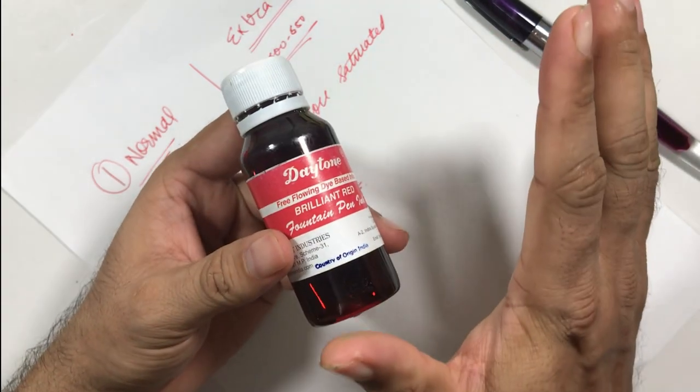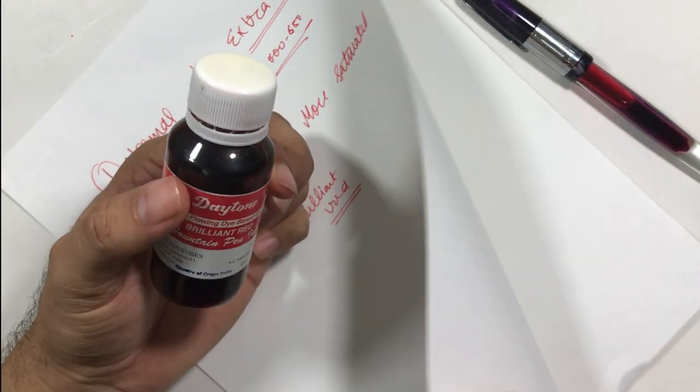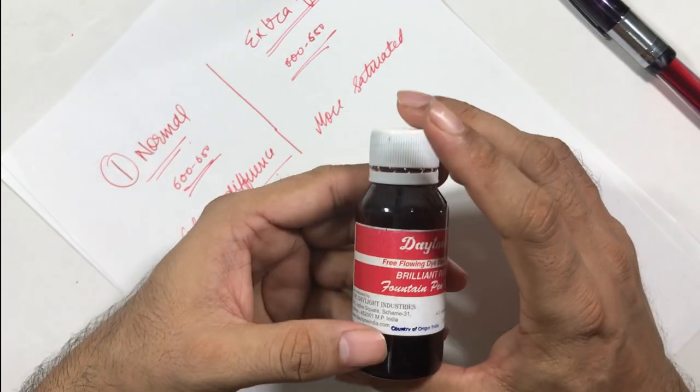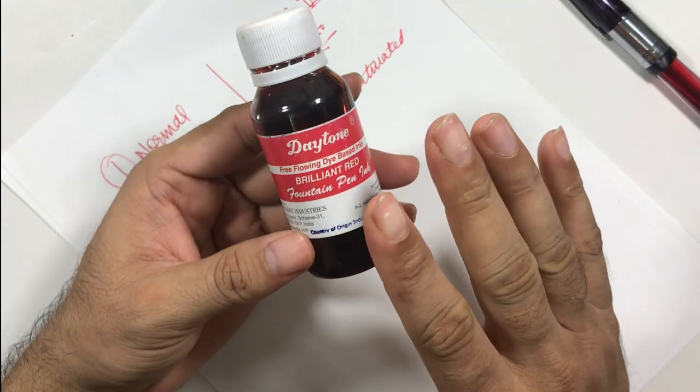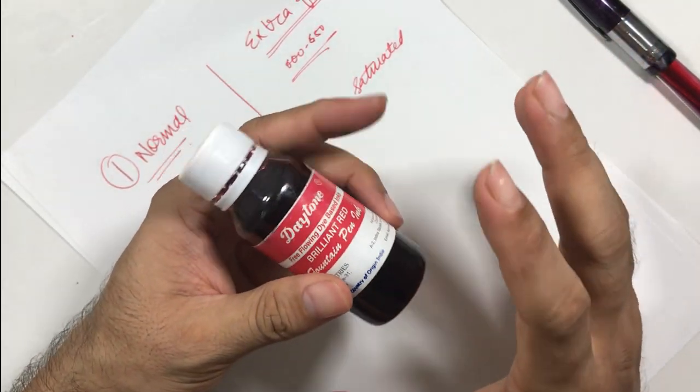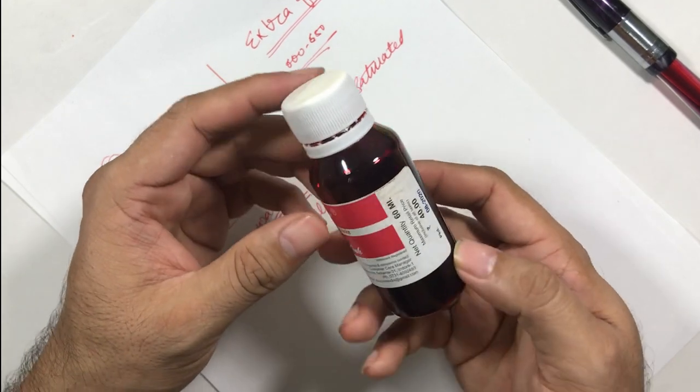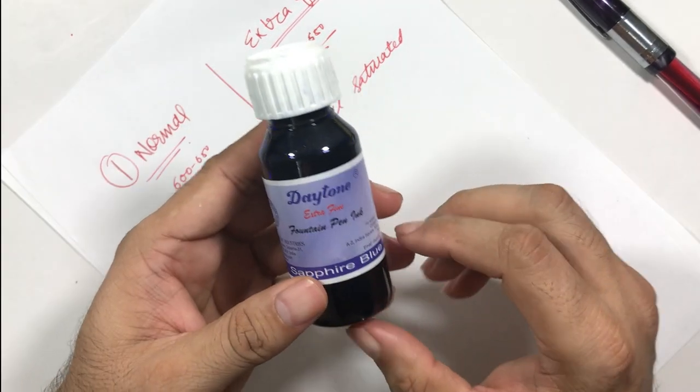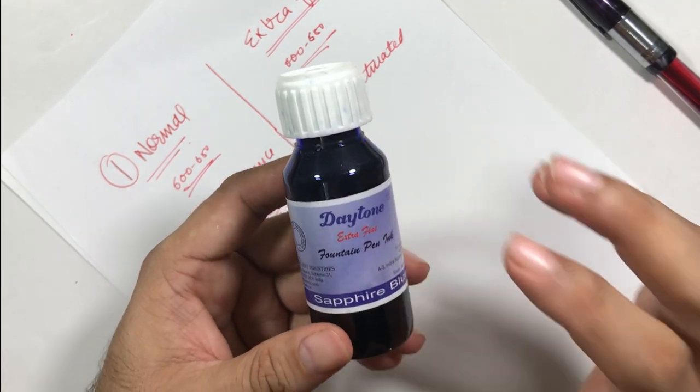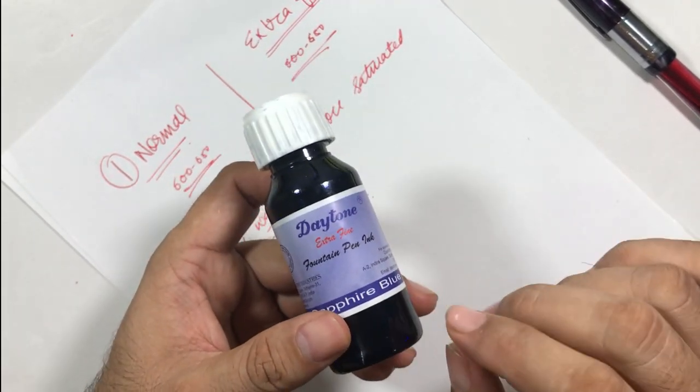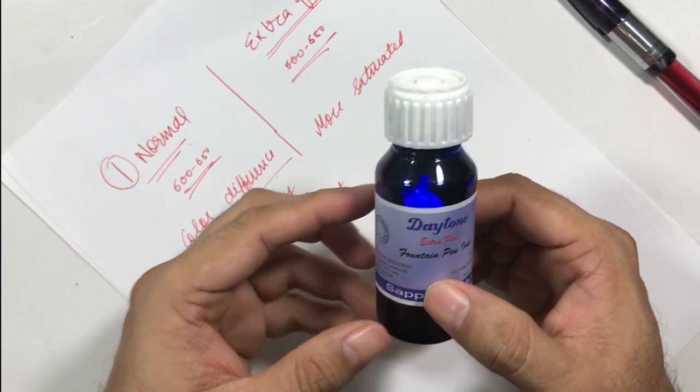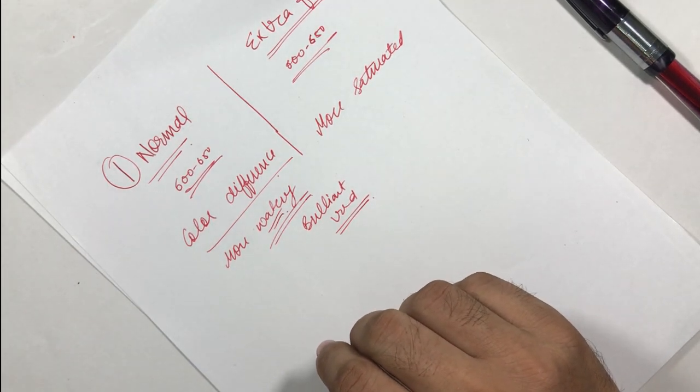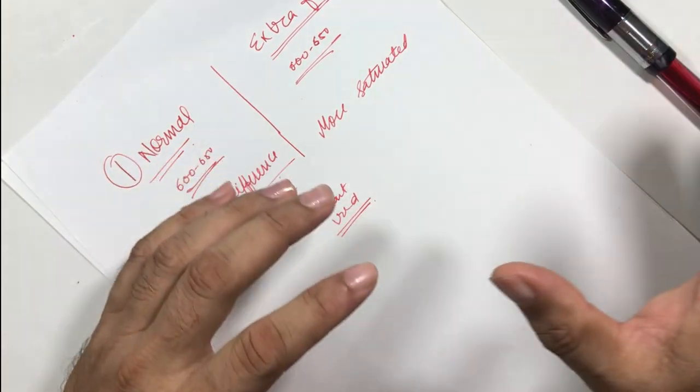This is 100 GSM paper, so the ink is behaving okay on this paper, but on normal papers, even on Rhodia, these normal Dayton inks tend to feather and bleed through because they are more watery. On the other hand, extra fine inks are more saturated, more vivid. They tend to hold on to the paper well, they don't feather much, and it's quite fun to write with these inks.